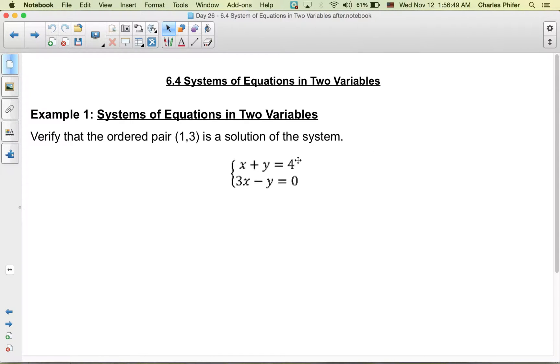This is Section 6.4, Systems of Equations in Two Variables. We want to look at solving systems of equations in two variables. For Example 1, we want to verify that the ordered pair (1,3) is a solution of the system.